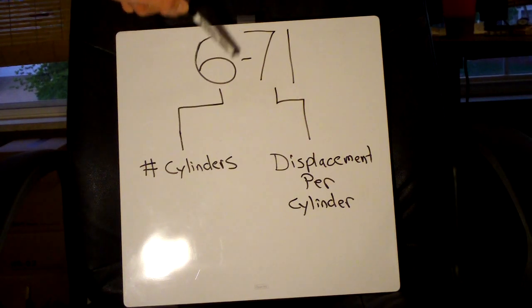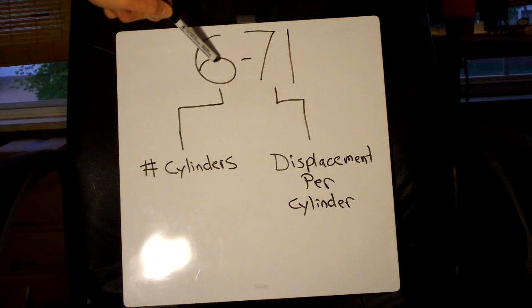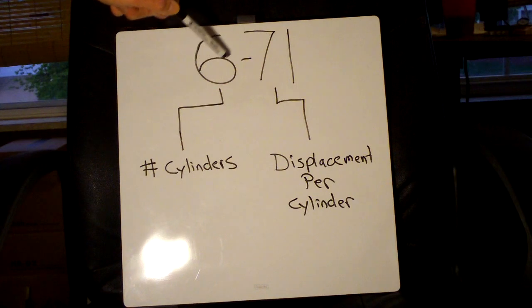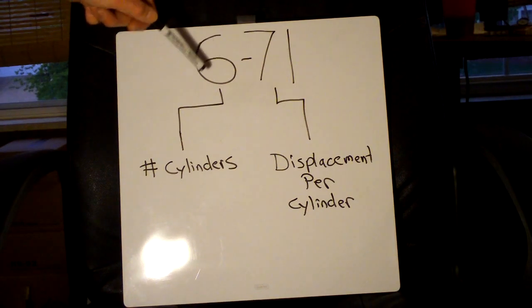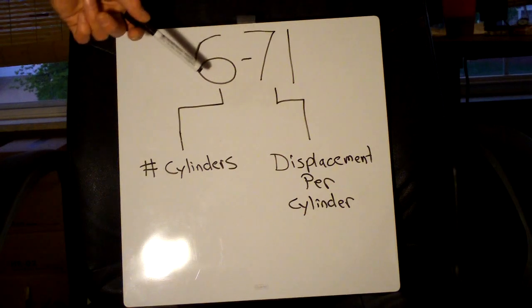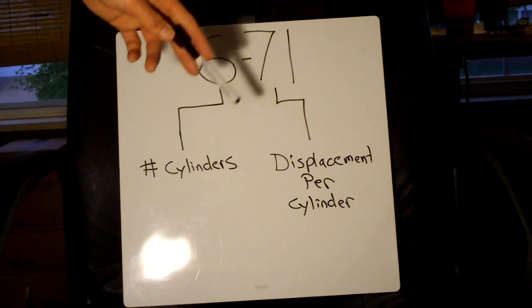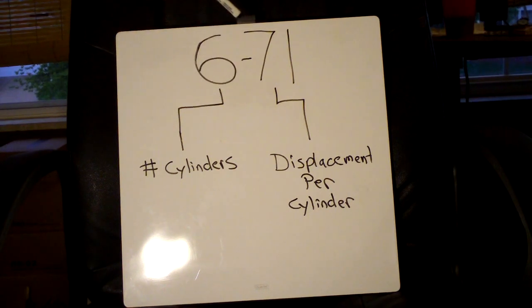Now if there's no letter between the first number and the dash, that is indicating it's an inline cylinder engine. For example, this is a six-cylinder inline engine. Then you'll see a dash, and these last two numbers here are going to denote the displacement per cylinder. So basically in this engine, you're going to have 71 cubic inches per cylinder.